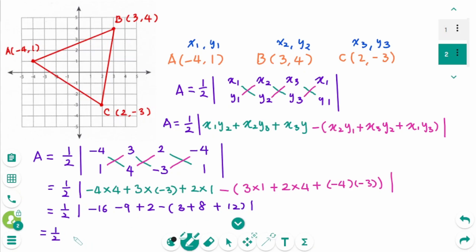Equals one-half times, this part is -23, minus this part which is also 23. Equals one-half times the absolute value of -46, equals one-half times 46. The final answer is 23.